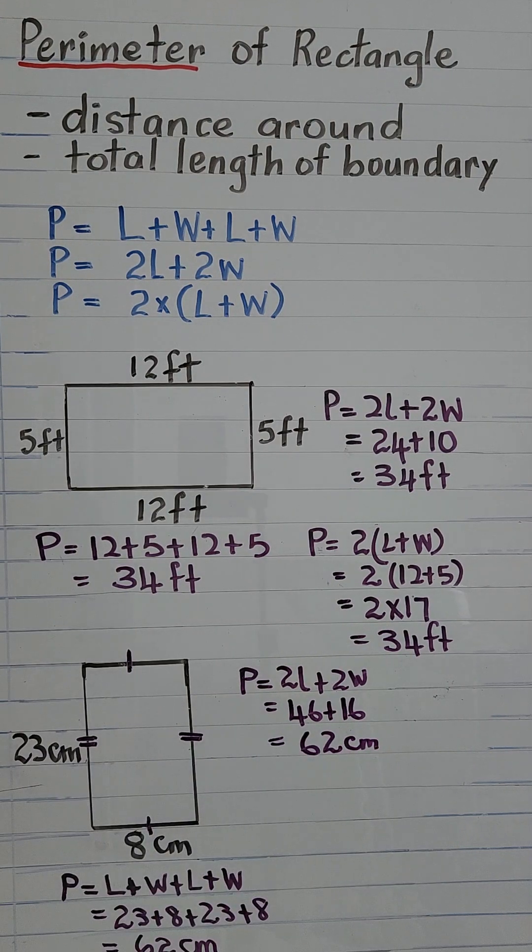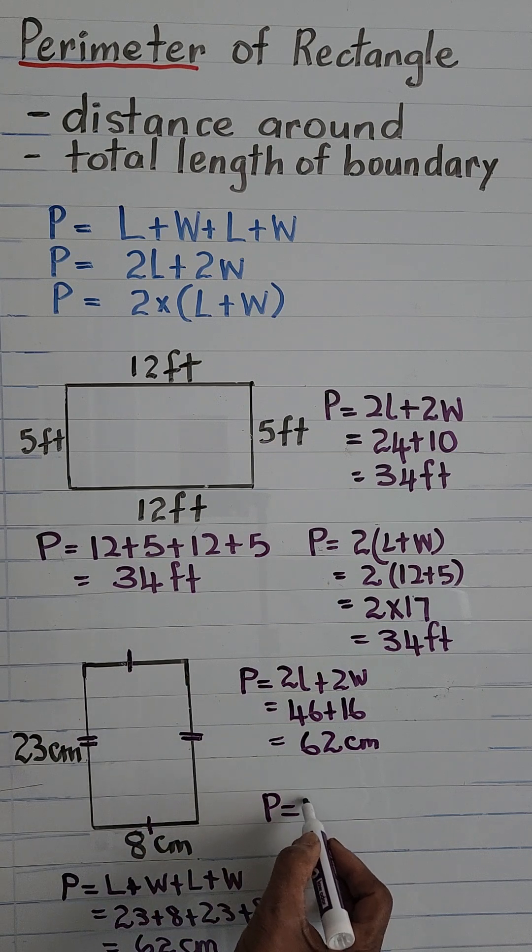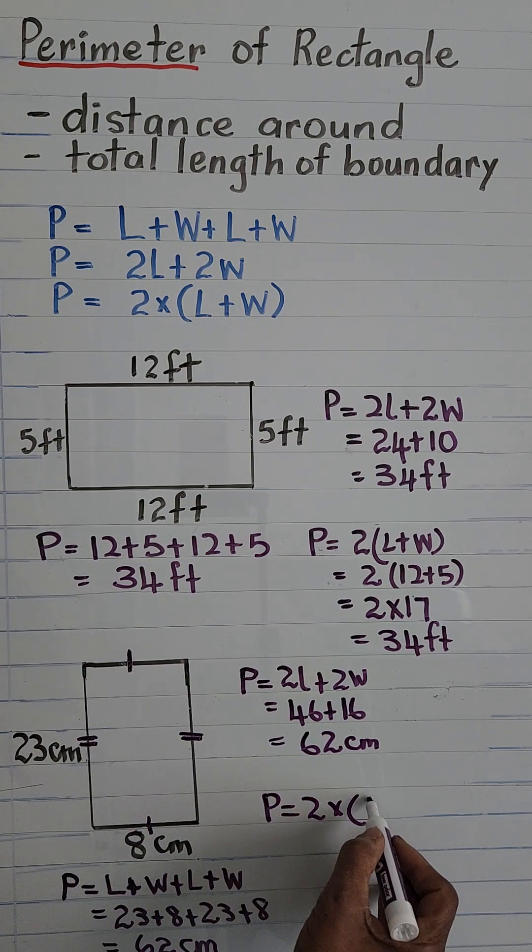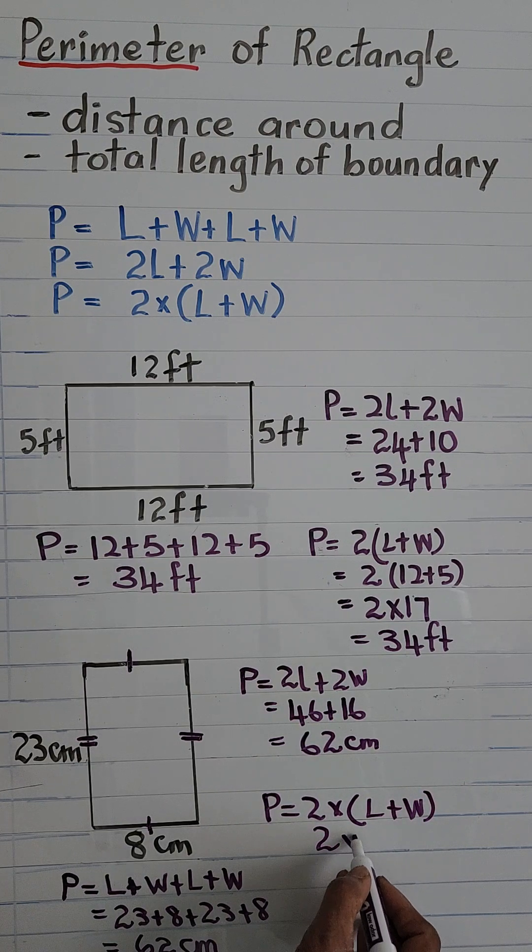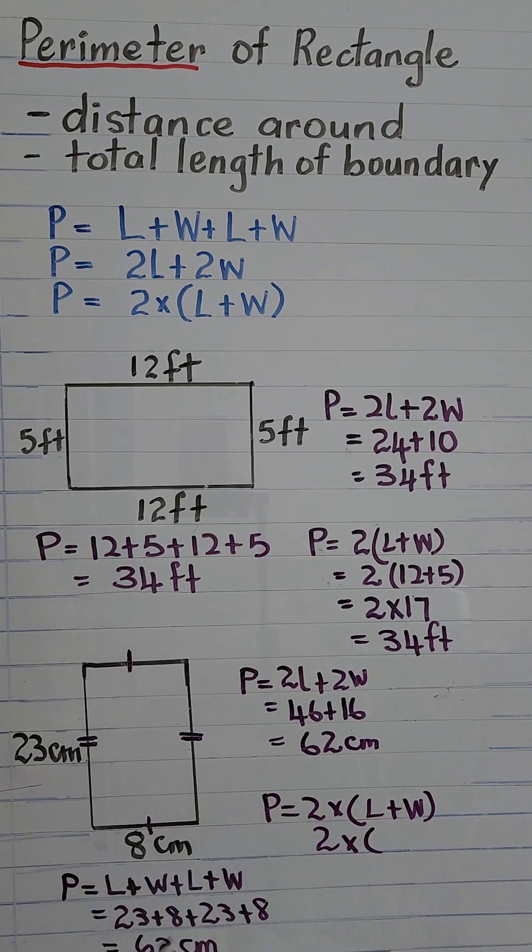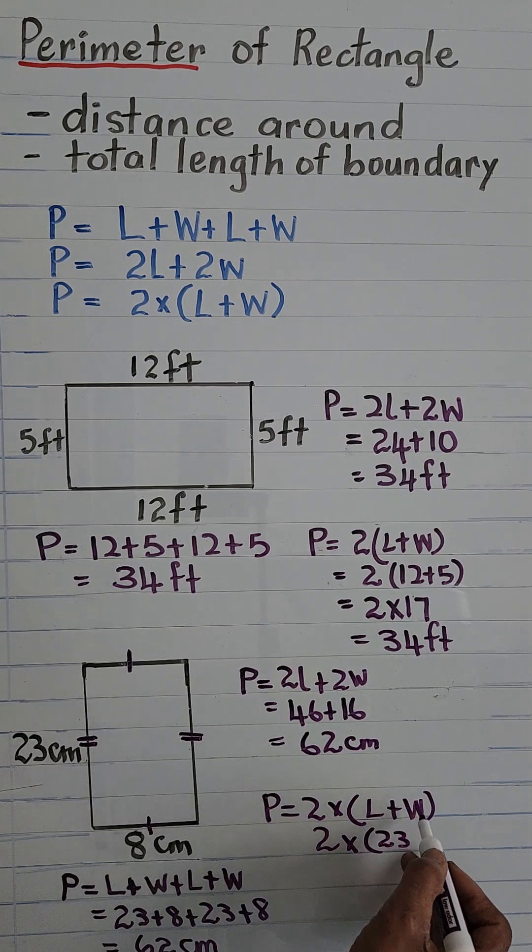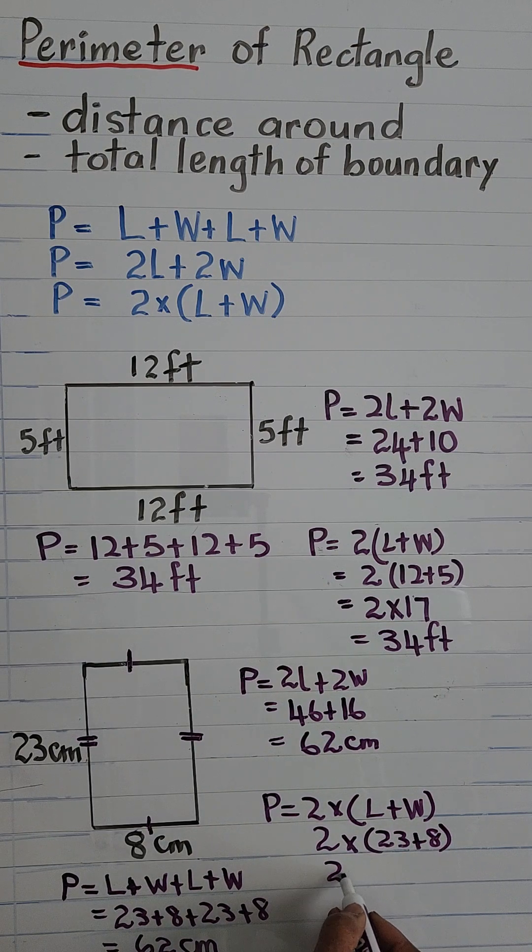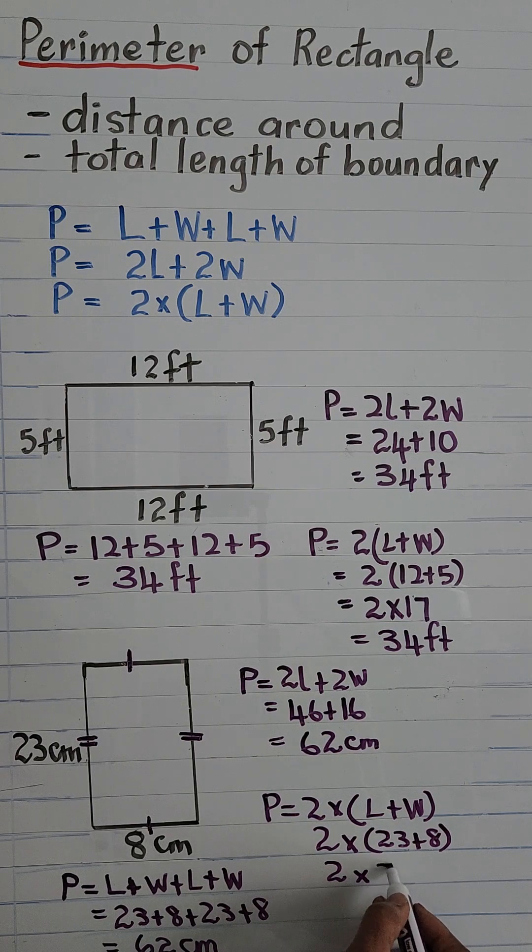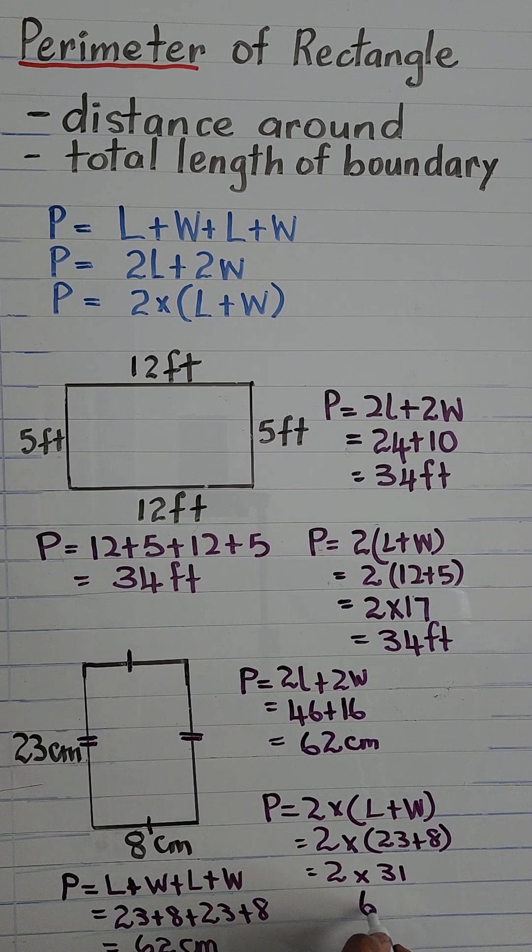And finally, let's try P is equal to 2 times L plus W. That's 2 times 23 plus 8, and that is 2 times 31, and that is equal to 62 centimeters.